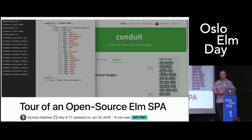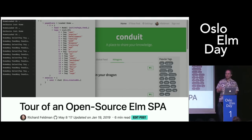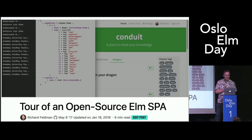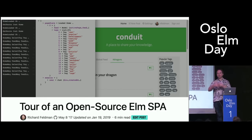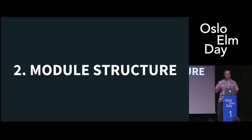So I wrote a blog post about this. I'm actually a glacially slow writer — apologies to people who haven't gotten Elm in Action yet, but it's almost done. This is one of the few blog posts I've actually shipped. It basically explained the decisions I made with the initial version. And this talk is going to kind of follow up on that. So let's get into it — let's talk about module structure first.